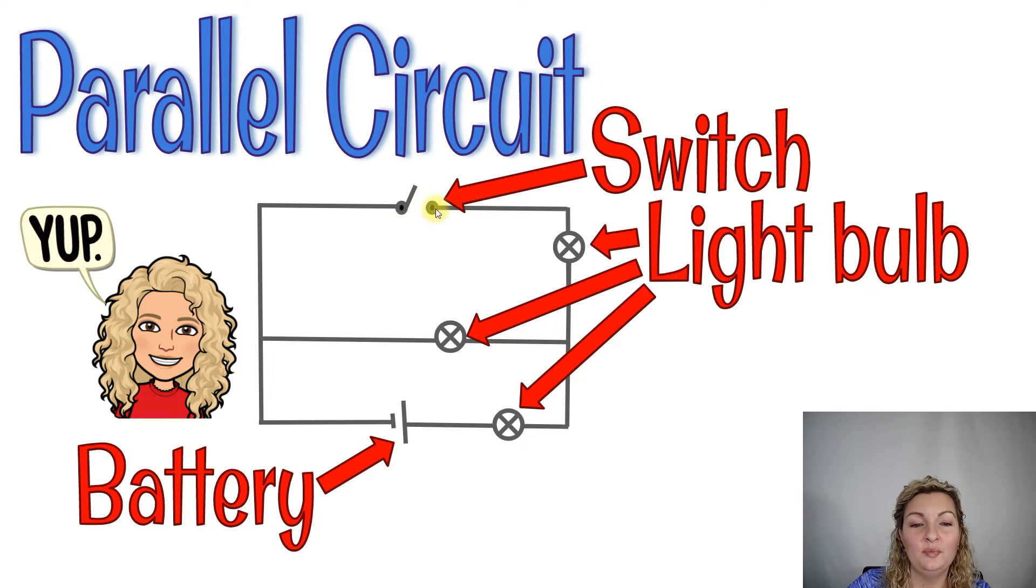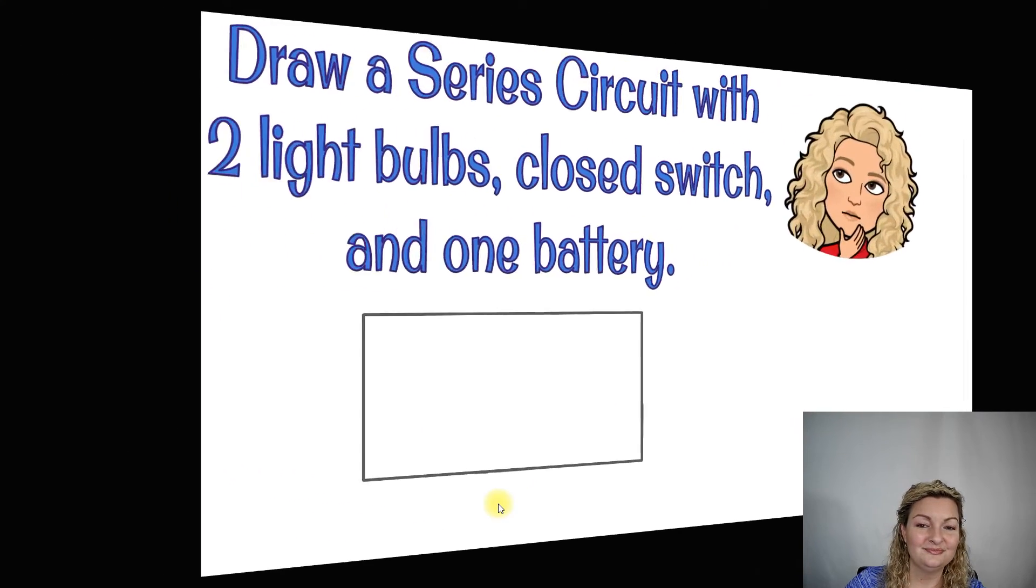So we can see we have an open switch here and there are three light bulbs. Three light bulbs aren't necessary for a parallel circuit. Really, only two are, right? You want to make sure you have a load on each branch to use that electricity. But I went ahead and put three just for fun.